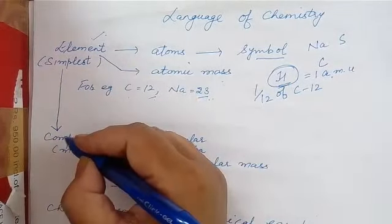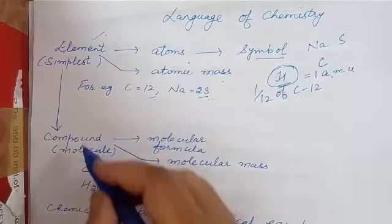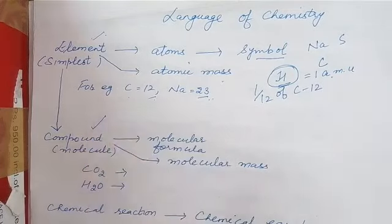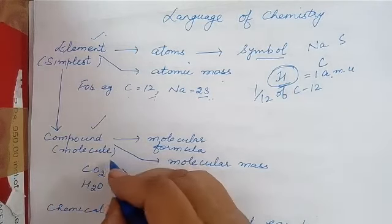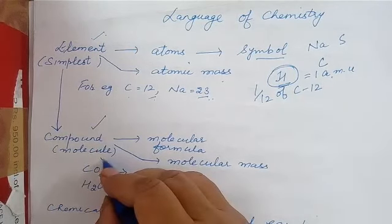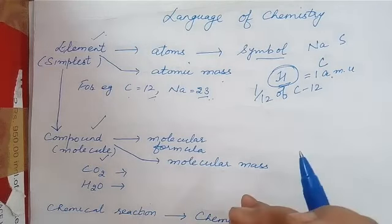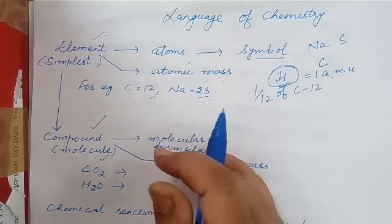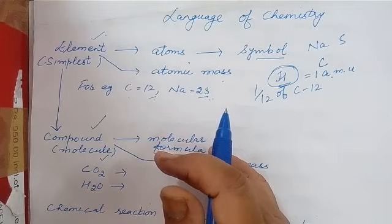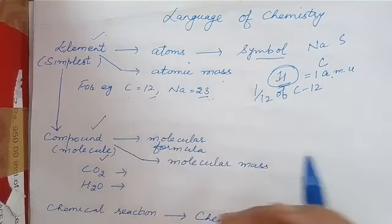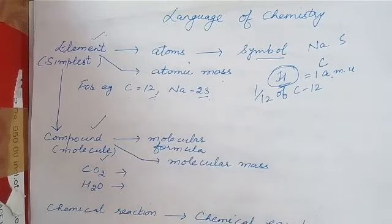Now when elements combine, they form a compound. Elements form compounds. This compound is also called a molecule. What is a molecule? It is a combination of two or more atoms, whether they are the same kind of atoms or different kinds of atoms.